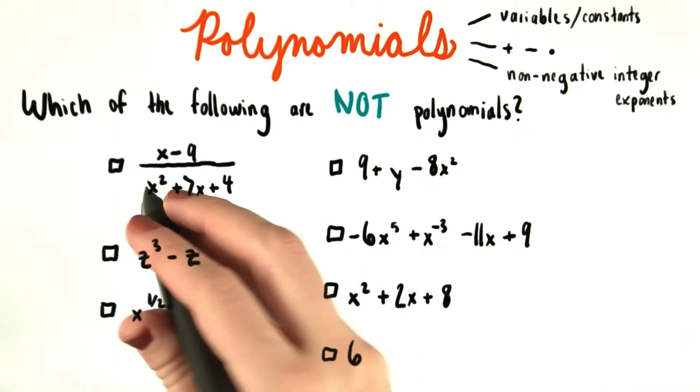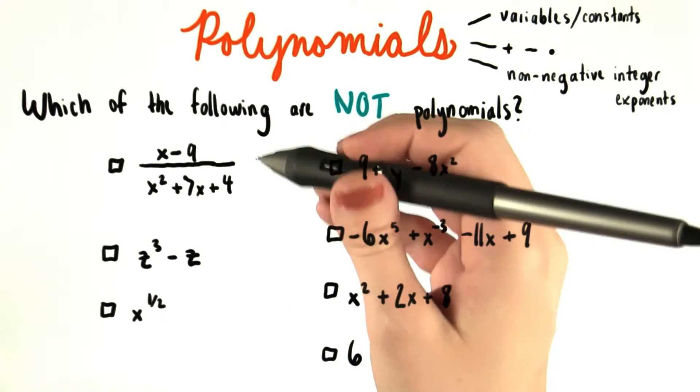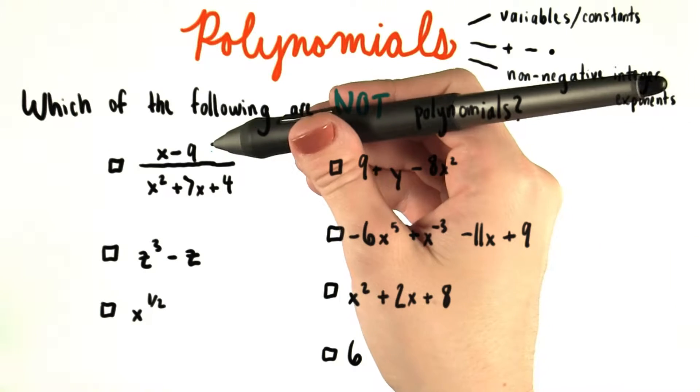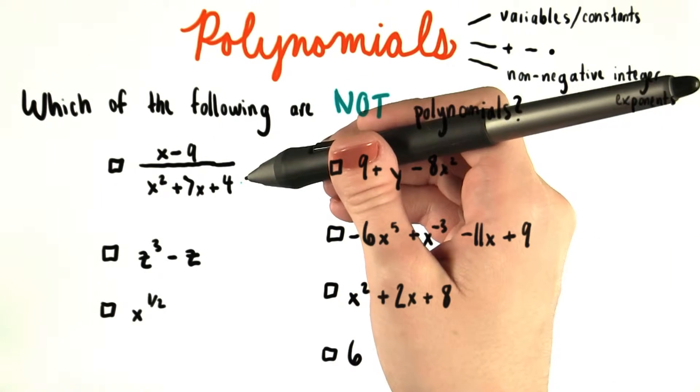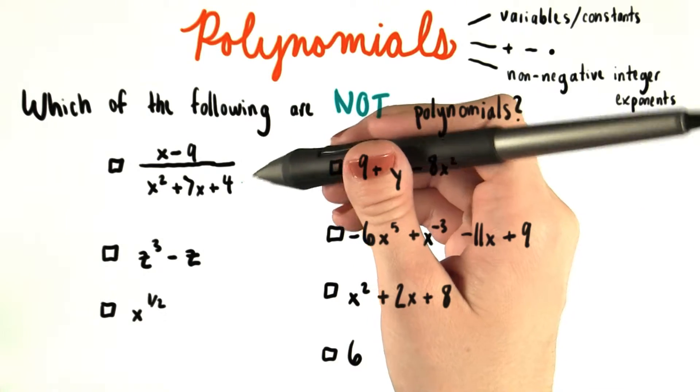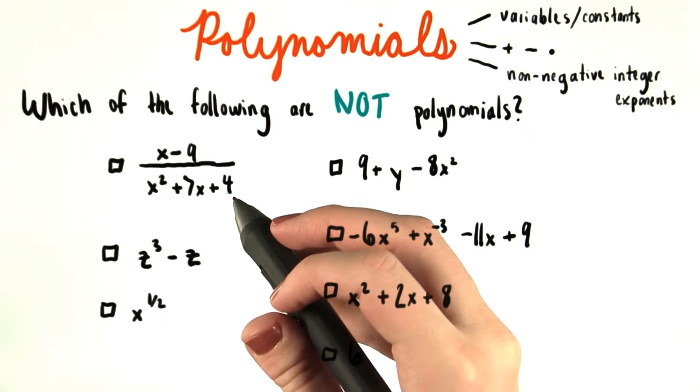But this first choice right here has a big division sign in it, dividing one expression by another expression. Now, if we had either the numerator or the denominator of this fraction on its own, then both of them would be polynomials. But because they're divided, this is not a polynomial.